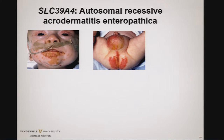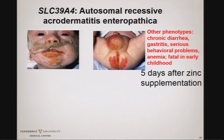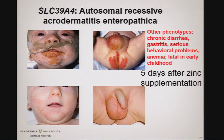As a canonical example of an autosomal recessive Mendelian disease, consider the zinc transporter gene that leads, in an autosomal recessive manner, to acrodermatitis enteropathica. This is associated with a skin phenotype, chronic diarrhea, gastritis, serious behavioral problems, and anemia. Until the gene was cloned it was fatal in early childhood. Then the gene was found to be a zinc transporter — and five days after zinc supplementation, the rash clears, the diarrhea clears, and the behavioral problems are reported to clear as well.